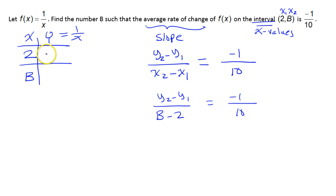Well, that means this y value, if x is 2, then this is going to be 1 over 2. Guess what this y value is going to be? You guessed it. This is going to be 1 over b. So this is y2, and this is y1. Just like this was x2, and this is x1.